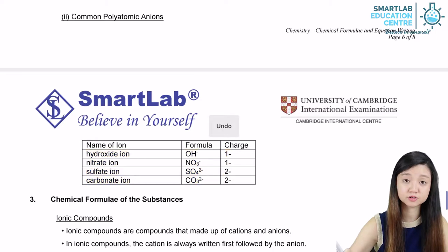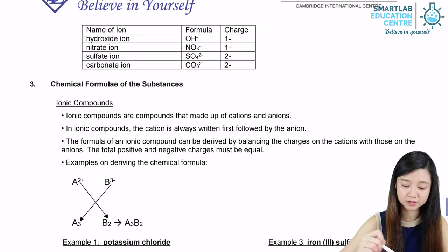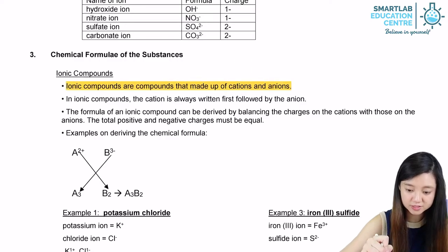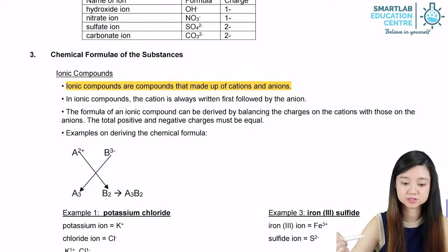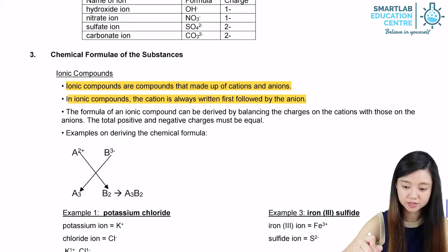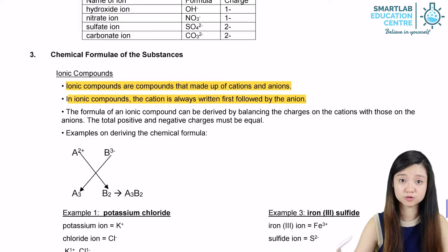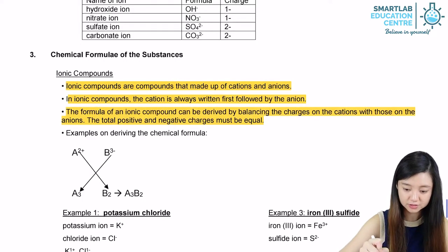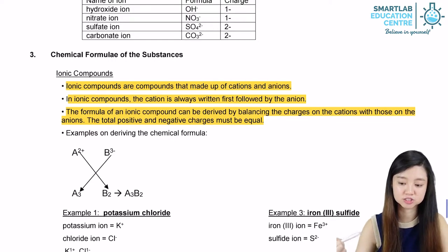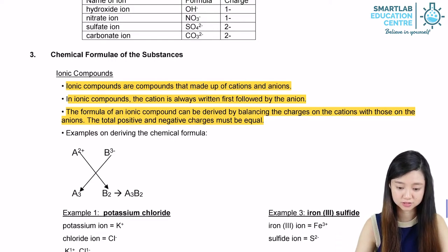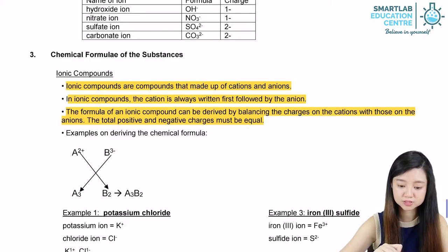When we write the chemical formula of ionic compounds, we have to bear in mind that ionic compounds are made up of cations and anions. In the ionic compound, the cation has always to be written first, followed by the anion. The formula of the ionic compound is derived by balancing the charges on the cations with those on the anions. In the end, the total positive and negative charges have to be equal.